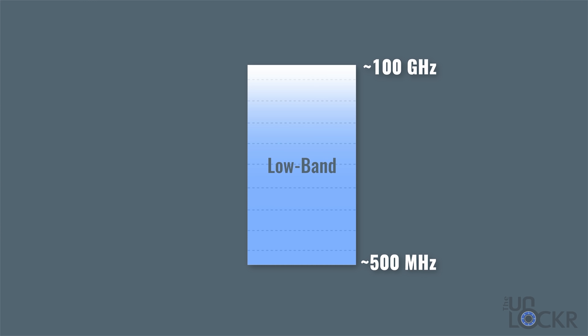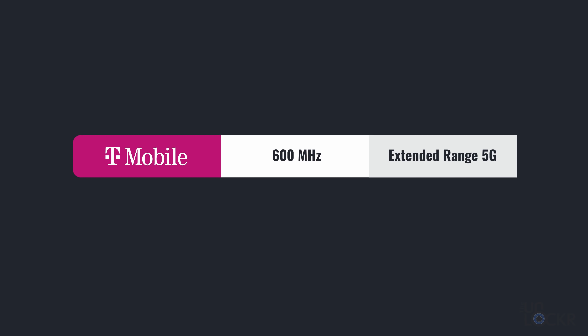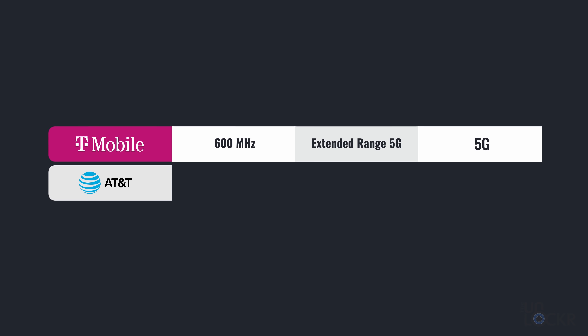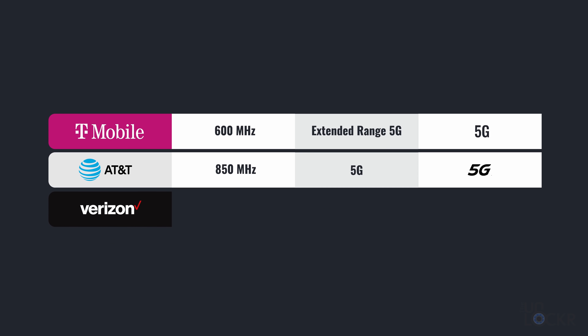Low band 5G is 5G in the frequencies below two gigahertz, which is where we usually see the range of LTE. Some examples here in the US: T-Mobile uses their 600 megahertz for their 5G, and they actually call this their extended range 5G, but the symbol on your phone just comes up as 5G. AT&T is using their 850 megahertz band and they just call it 5G — the icon is also 5G. And Verizon is essentially using all of their original LTE bands — 850, 900, 1700, and 2100 — all for LTE and 5G at the same time.